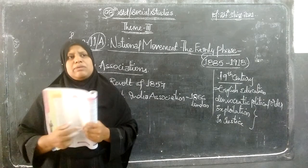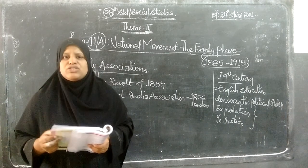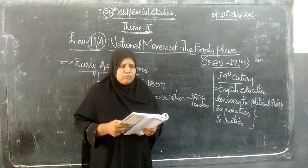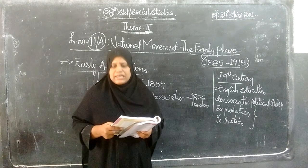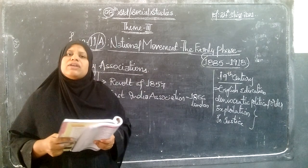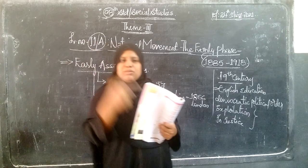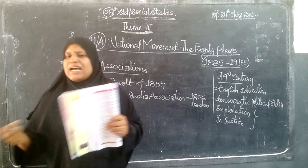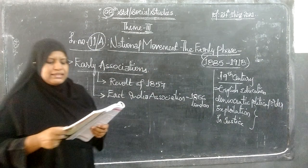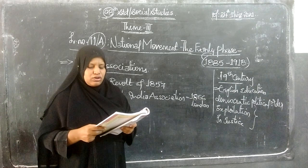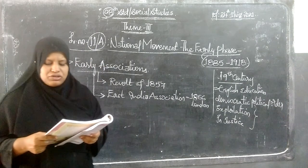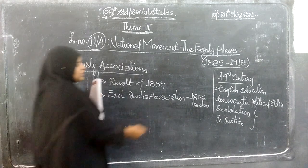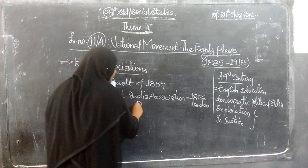More and more, educated Indian people started criticizing the British and their policies. In creating awareness about British policies and their impact, different types of associations and groups began to form. In 1866, Dadabhai Naoroji organized the East India Association in London to discuss the Indian question.